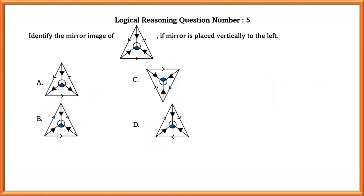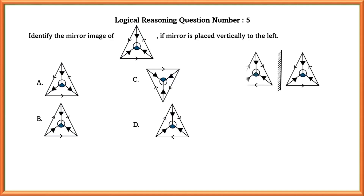Logical reasoning question number five: identify the mirror image of this figure if the mirror is placed vertically to the left. Same approach — if we place it vertically to the left, we can see that option B is correct.